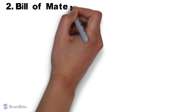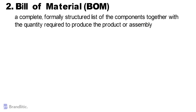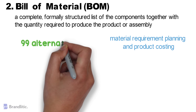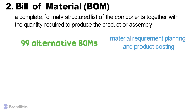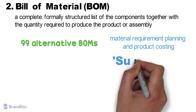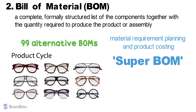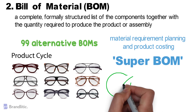Second is the Bill of Material, or BOM. A bill of material is a complete, formally structured list of components together with the quantity required to produce the product or assembly. BOMs are used in material requirement planning and production costing, and you can create up to 19 alternative BOMs for a single product. For products having variants, you can create super BOMs, which contain all possible types of components used to manufacture different variants. The appropriate component is selected based on the characteristics chosen in the sales order — for example, a product like a bicycle can contain all types of frames with different colors and sizes, and the desired frame is selected in the production order based on the color and size chosen in the sales order.